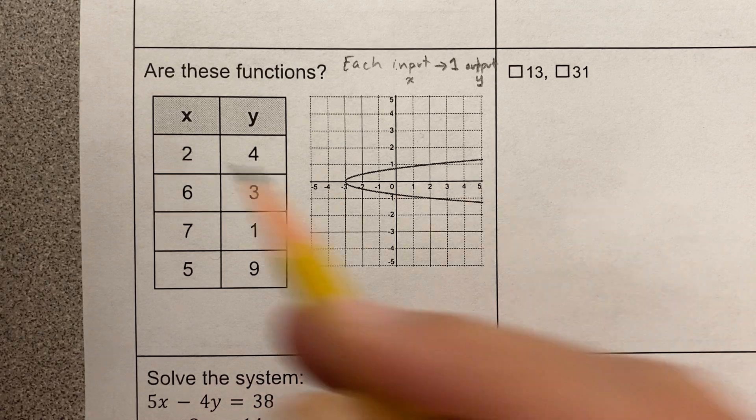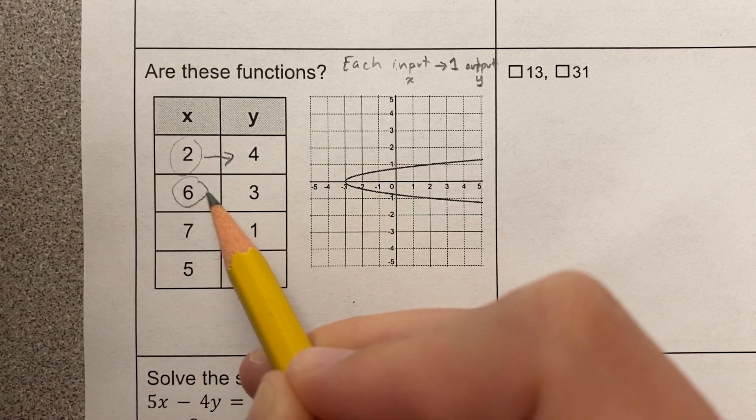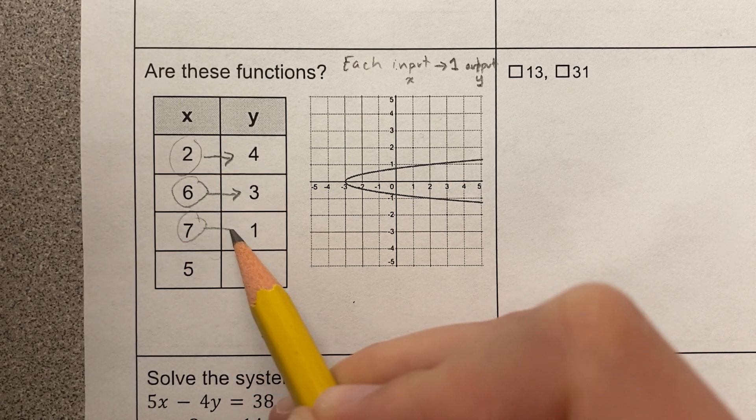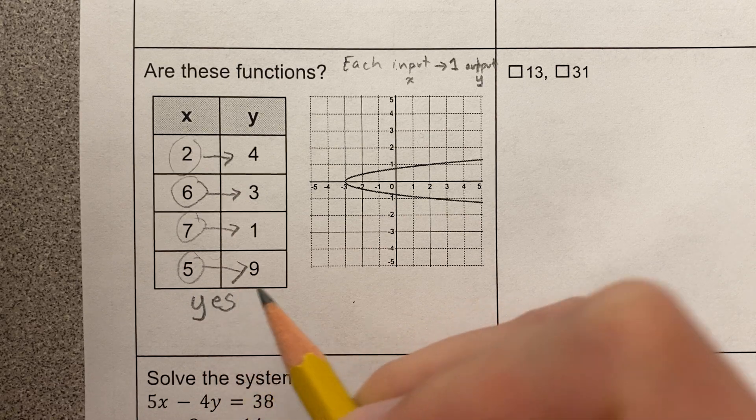Okay, that's the rule. So look, this input 2 has one output. This input 6 has one output. This input 7 has one output. This input 5 has one output. So this is yes, this is a function.